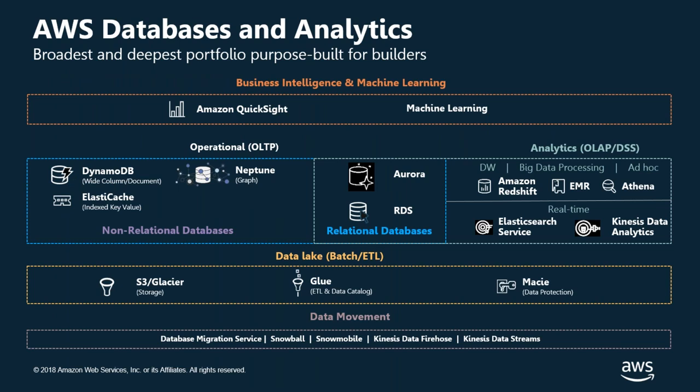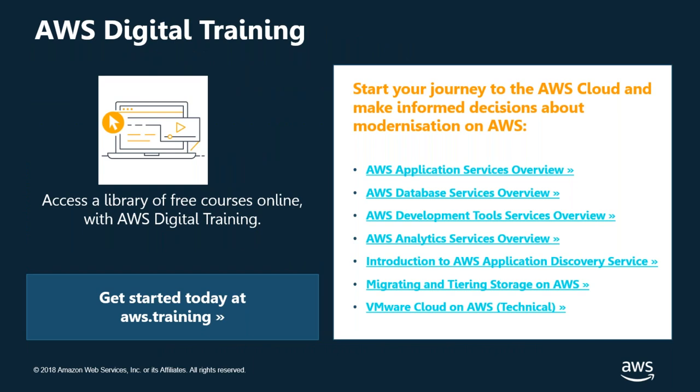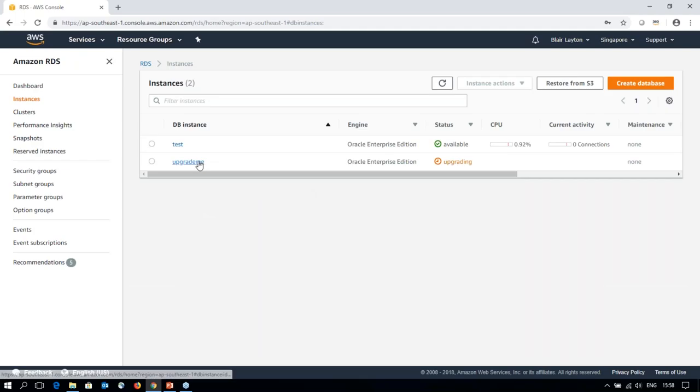The operational OLTP databases — DynamoDB, Neptune, ElastiCache, Aurora, and RDS — are the core focus, but there are plenty of other data-related AWS services to explore. Visit the AWS website to learn more about database and data-related services not discussed today, including the library of free online AWS digital training courses and physical in-class training. Before closing, let me jump back to the demo — the upgrade is still running, but as shown earlier, a full Oracle 11gR2 to Oracle 12c upgrade on a Multi-AZ instance took approximately 27 minutes.